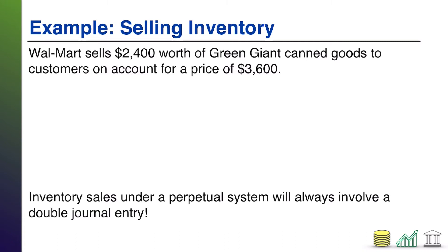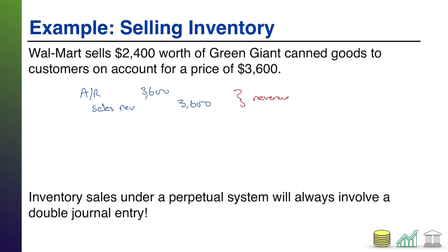So let's assemble the journal entry. First up, you are charging the customer $3,600 on account, so debit accounts receivable $3,600, credit sales revenue $3,600. Why accounts receivable? Because we know it's on account — had they paid in cash, it would have been just as simple as debiting cash. Why sales revenue? Because you have sold a product; this is the price you earned from selling that product, what you charge the customer. This is what I like to call the revenue portion of an inventory sales transaction — it covers what happened from a revenue standpoint: charged customer, earned revenue, and in this case they'll pay you later, hence a receivable.